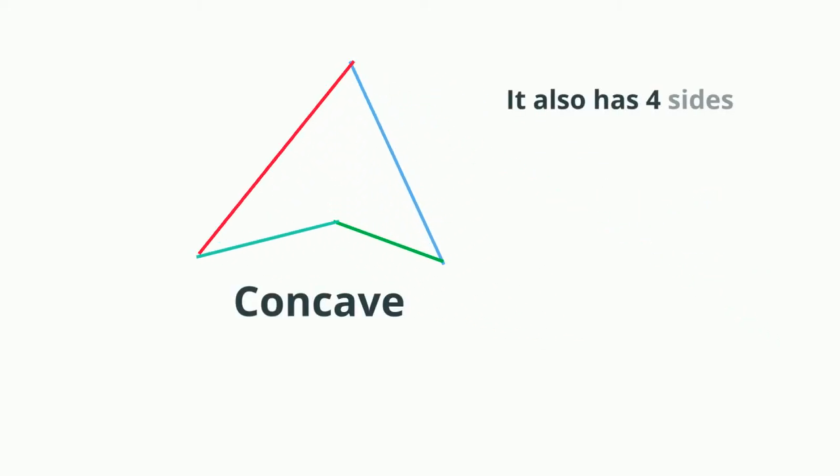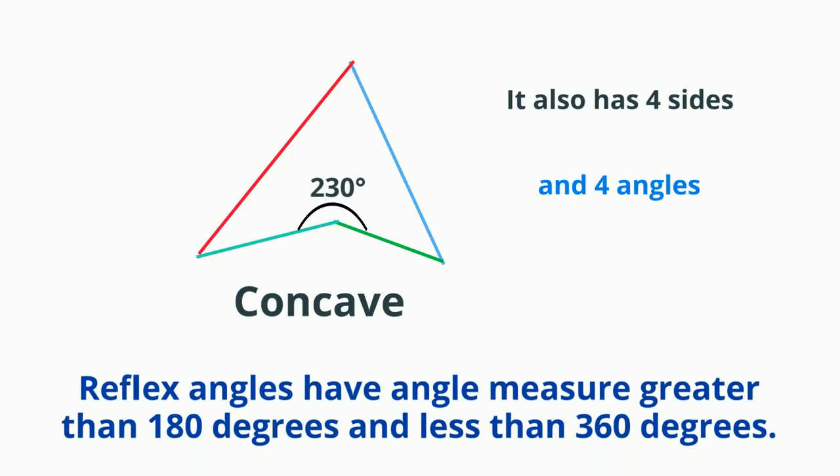Here is an example of a concave quadrilateral. A concave quadrilateral also has four angles, but one angle is a reflex angle which has a measure greater than 180 degrees.